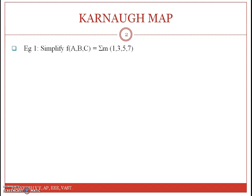The first question is: simplify f of A, B, C equal to sigma m(1, 3, 5, 7). The first step is to form the K-map and enter these values of minterms. As it is given sigma, it means sum of products and minterms. The minterms are 1, 3, 5, and 7. So we will form the K-map and enter values 1 into positions 1, 3, 5, 7.